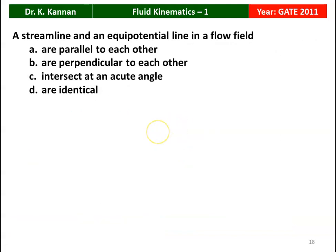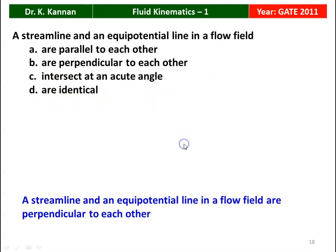The next question from the GATE 2011 question paper. The streamline and an equipotential line in a flow field are: parallel to each other, perpendicular to each other, intersect at an acute angle, or are identical. The streamline and the equipotential line in the flow field are perpendicular to each other. The correct answer is option B.